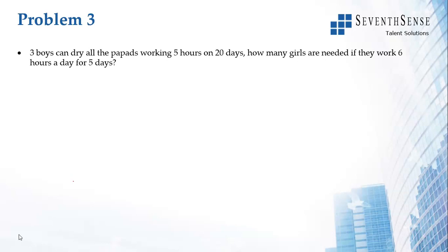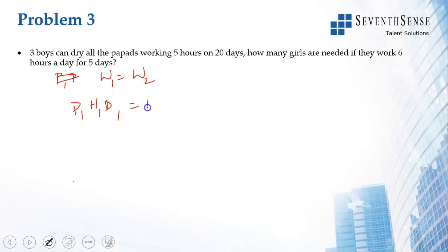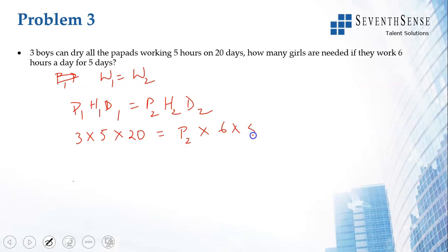Next question: 3 boys can dry all the puppets if they work for 5 hours a day on 20 days — meaning 5 hours each day for 20 days. How many girls are needed if they work 6 hours a day for 5 days? Here work done is the same, so W1 equals W2, and we use P1H1D1 = P2H2D2. P1=3 boys, H1=5, D1=20 equals P2 girls × H2=6 × D2=5. Solving: P2 equals 60 divided by 6, which is 10 girls. So 10 girls are needed to dry all the puppets working 6 hours a day for 5 days.